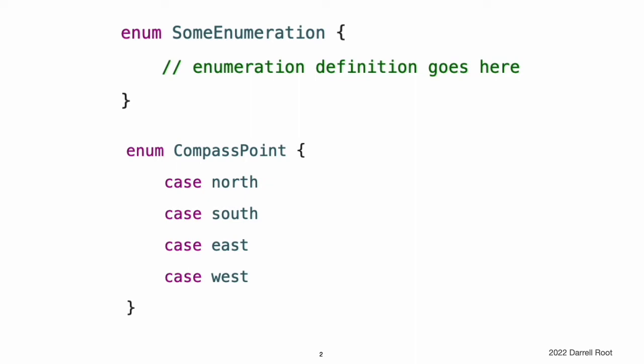Enumeration Syntax. You introduce enumerations with the enum keyword and place their entire definition within a pair of braces. Here is an example for the four main points of a compass. The values defined in an enumeration, such as north, south, east, and west, are its enumeration cases.